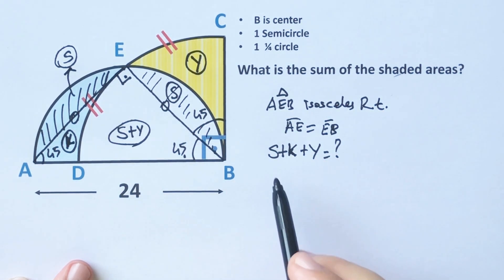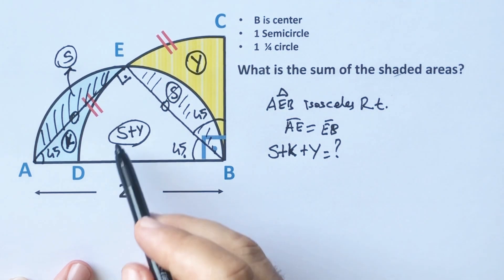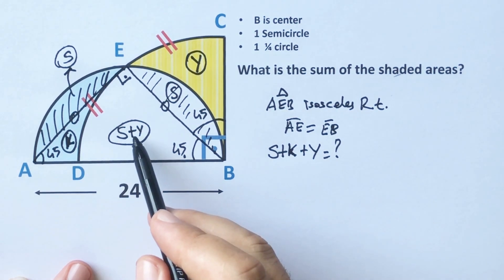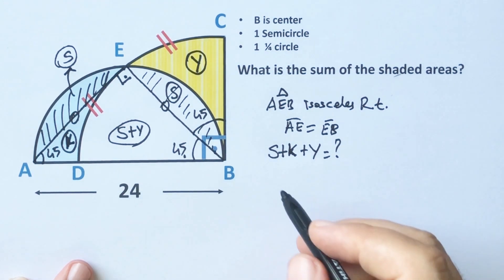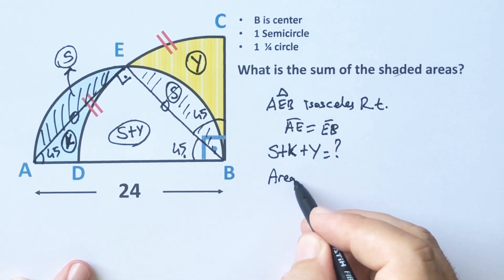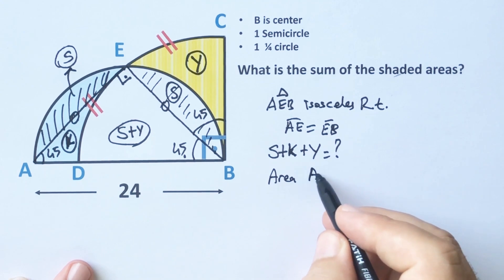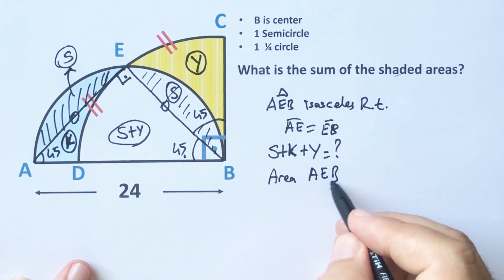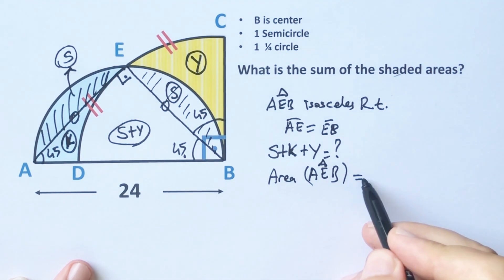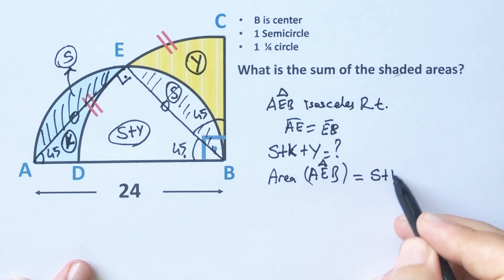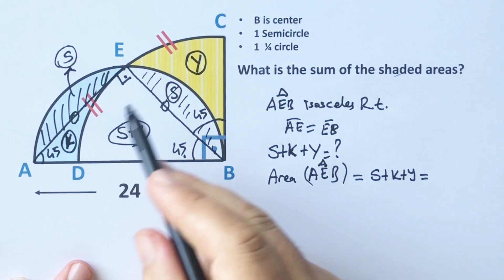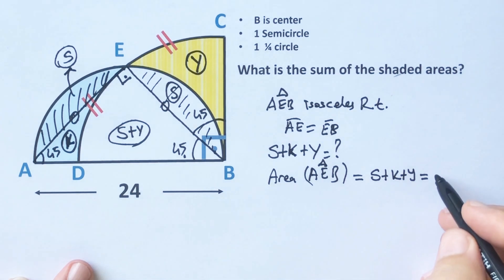If you look carefully, the area of the shaded areas are equal to this triangle area. The area of the triangle AEB equals S plus S plus Y plus K. That means this is the sum of the shaded areas.